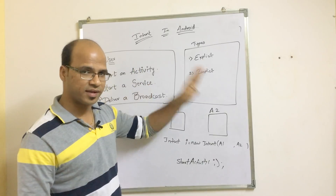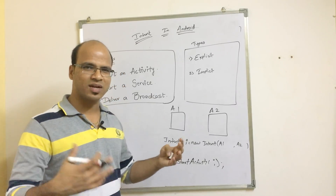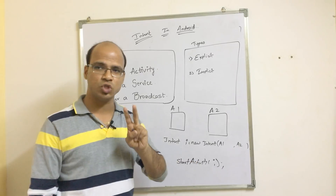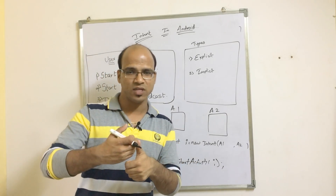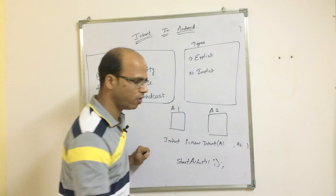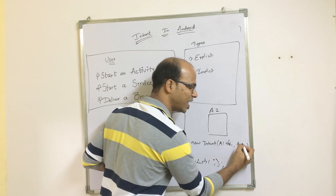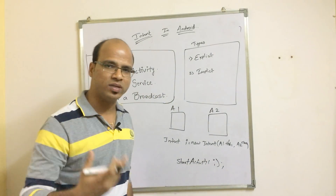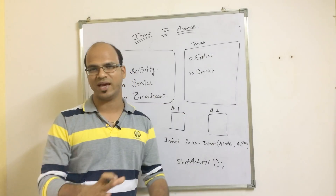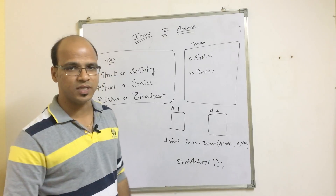To start the activity, use the method startActivity and pass the intent object. So the syntax is: Intent i = new Intent — the first parameter is the current activity object, which is 'this', and the second parameter is the class name of the target activity, written as A2.class. We use the class name because we haven't created the object yet — calling a2.class will create the object and you can see the activity. That's intent for you.